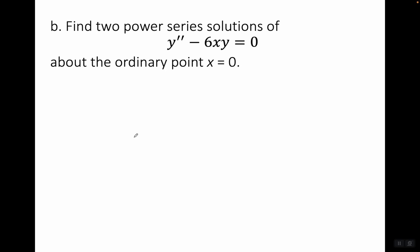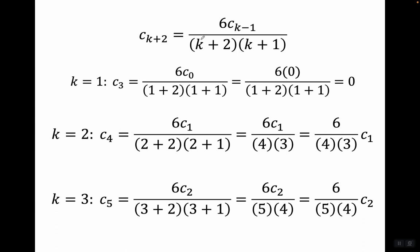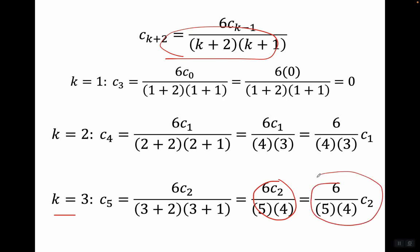Now we find two power series solutions of y double prime minus six x y equals zero about the ordinary point x equals zero using this recurrence relation. Plugging in k equals one: c sub three equals six c sub zero over (1+2)(1+1), which is six times zero, so c sub three equals zero. Plugging in k equals two: c sub four equals six c sub one over (4)(3), written as six over four times three, times c sub one. Plugging in k equals three: c sub five equals six c sub two over (5)(4), written as six over five times four, times c sub two.